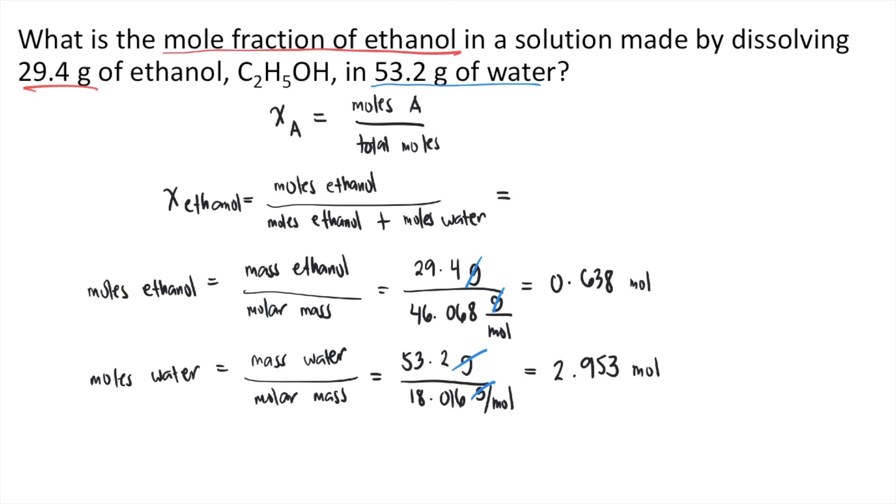Now that we solved the moles, we can plug it into the equation for mole fraction. The moles of ethanol is 0.638 moles divided by 0.638 plus the moles of water, which is 2.953 moles. If you solve this, you will get approximately 0.178. Remember, mole fraction has no unit. So the answer to this question is 0.178.